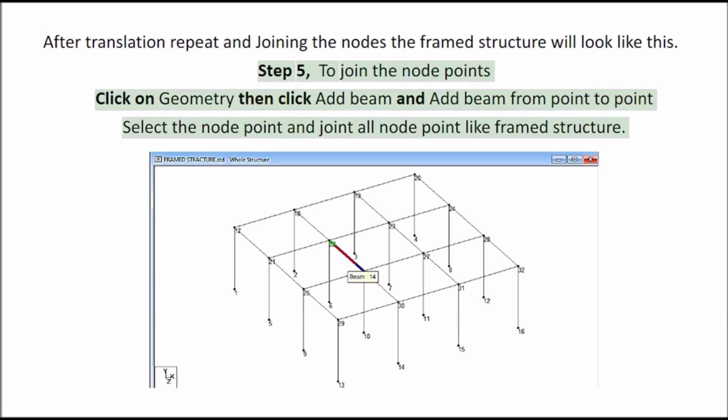Step 5, to join the node points click on geometry then click add beam and add beam from point to point. Select the node point and join all node point like framed structure.